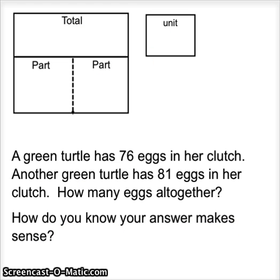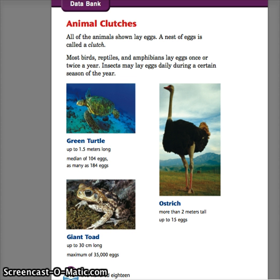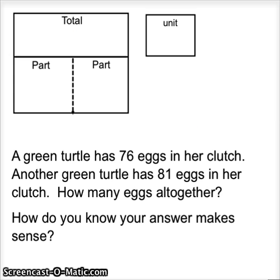The next one is looking at the green turtle. The green turtle can be up to 1.5 meters long, has a median of 104 eggs, as many as 184 eggs. 104 would be the number in the middle if we looked at a whole bunch of turtles and the number of eggs in their clutches. And as many as 184 means that's the maximum, the most number of eggs in a green turtle clutch.